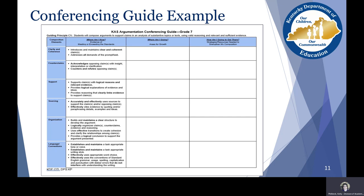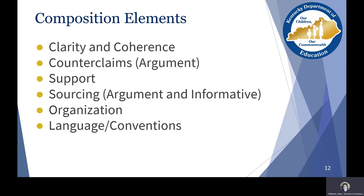This is just a visual reference so you know you've found the correct documents. On our Conferencing Guides, down the left-hand column, you'll see different composition elements such as clarity and coherence. For argument writing, you'll see a category for counterclaims. All modes will have a support category, sourcing for argument and informative writing, organization, and language and conventions.